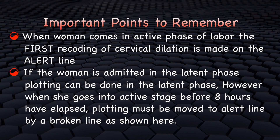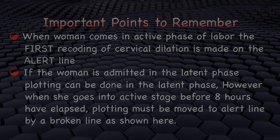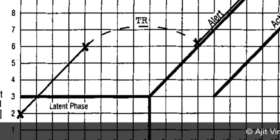Some important points to remember: when the woman comes in the active stage of labor, the first recording of cervical dilatation is made on the alert line. But what if the patient comes in the latent phase of labor? If she is admitted in the latent phase, plotting can be done; however, when she goes into the active stage before 8 hours have elapsed, plotting must be moved to the alert line by a broken line, as shown here.